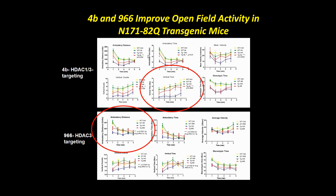Open field data measures multiple parameters: distance traveled, speed, rearing, and stereotypic movements — comparing 4B (HDAC 1 and 3) versus compound 966 (HDAC 3). Looking at vertical time — the amount of time the mouse spends on its rear paws — the drug-treated mouse is nearly indistinguishable from wild-type mice and greatly improved compared to vehicle mice. For ambulatory distance with compound 966, the drug-treated mice also show much greater distance traveled compared to vehicle-treated transgenic mice.